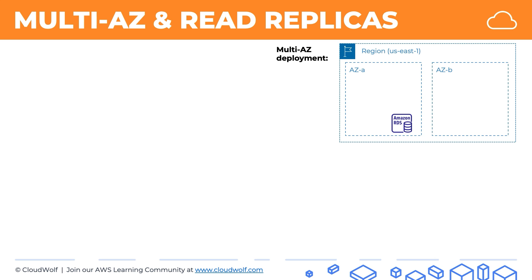What happens if this availability zone is unavailable, or if something is temporarily not working, or something happens to our database? Our website or application still needs to be running — it still needs to be servicing customers. That's where multi-AZ deployment comes in handy. With multi-AZ deployment, you get a standby database in another availability zone, and the main purpose of this is high availability.